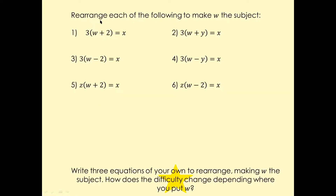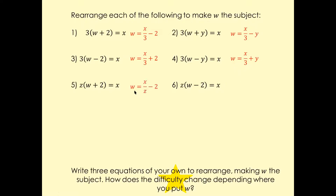Let's have a look at these questions and mark them. It's your choice whether to expand the brackets or simply move the number to the other side — divide by three on both sides and factorize. So W equals X over three minus Y, W equals X over three plus two, W equals X over three plus Y, W equals X over Z minus two, and W equals X over Z plus something.